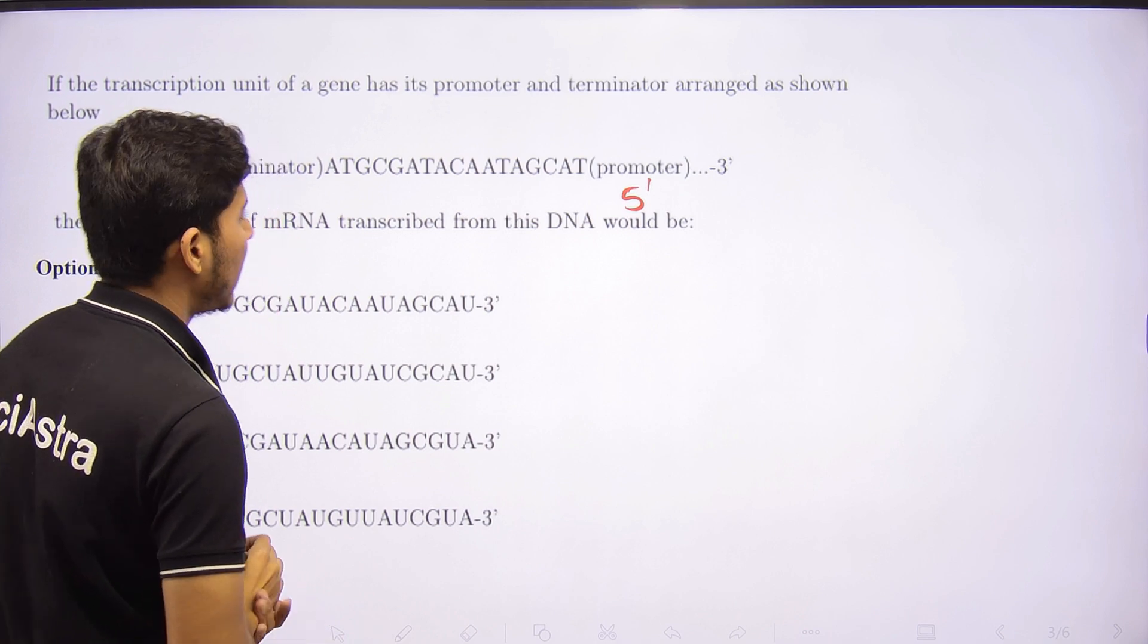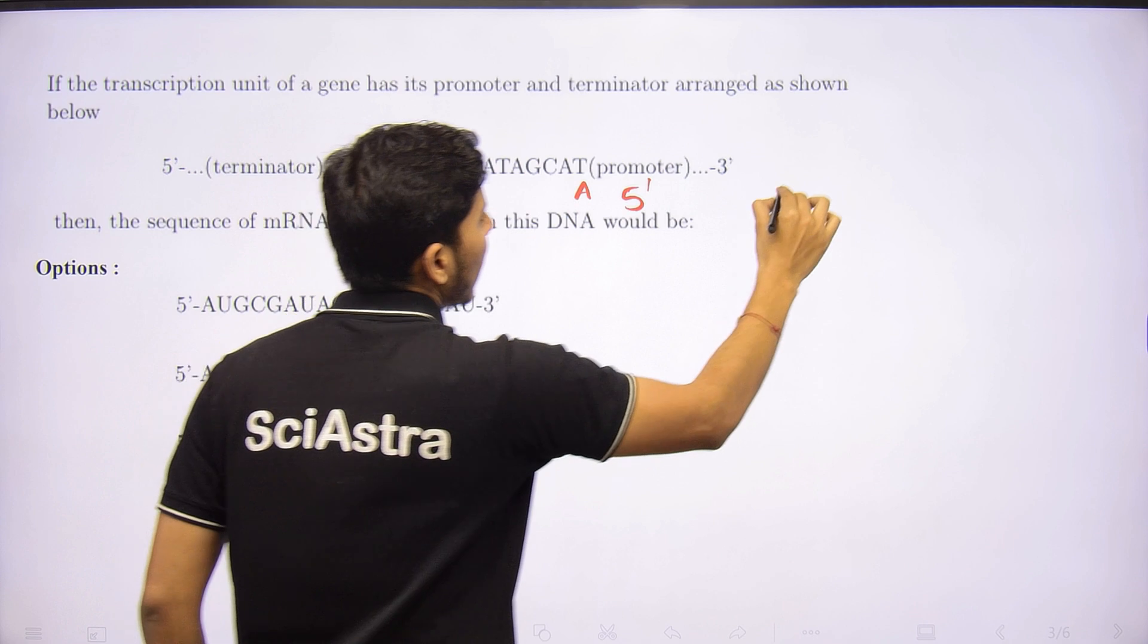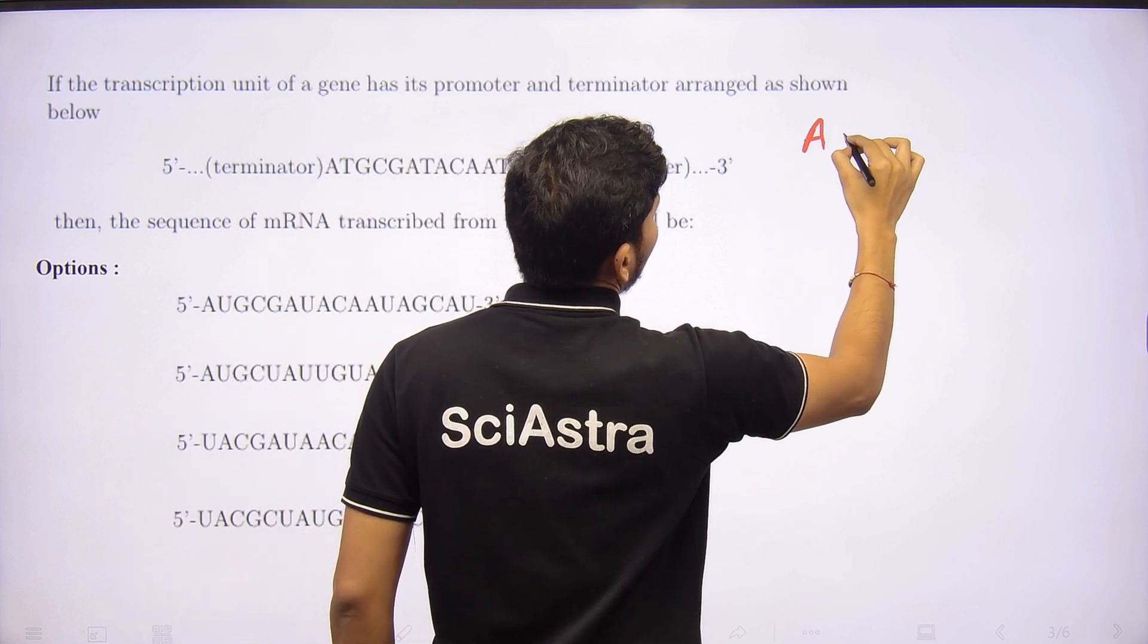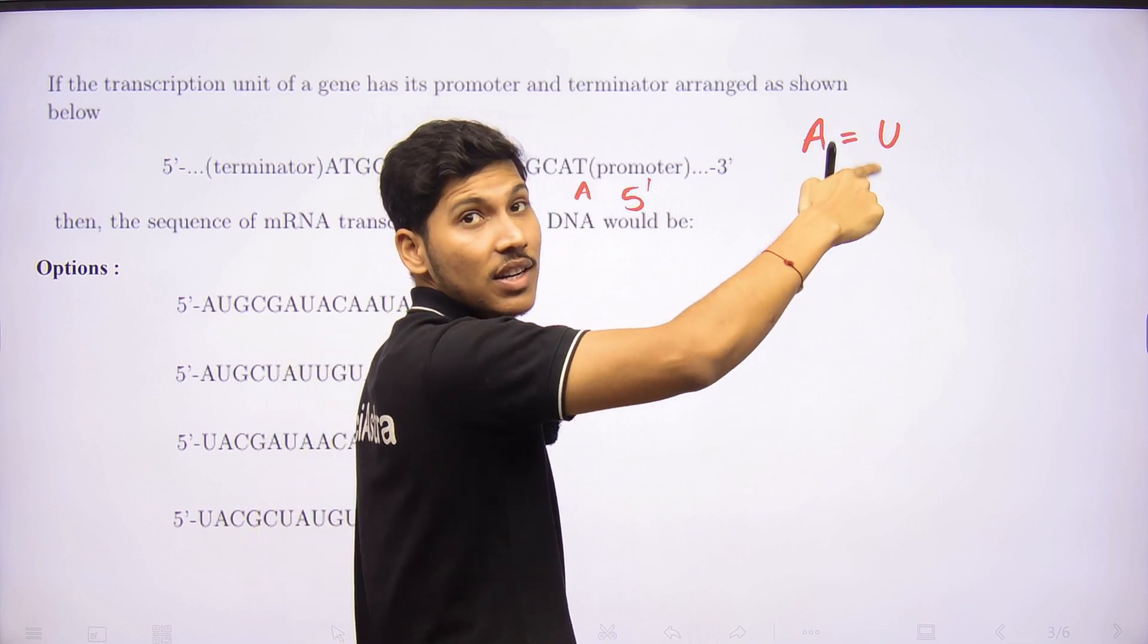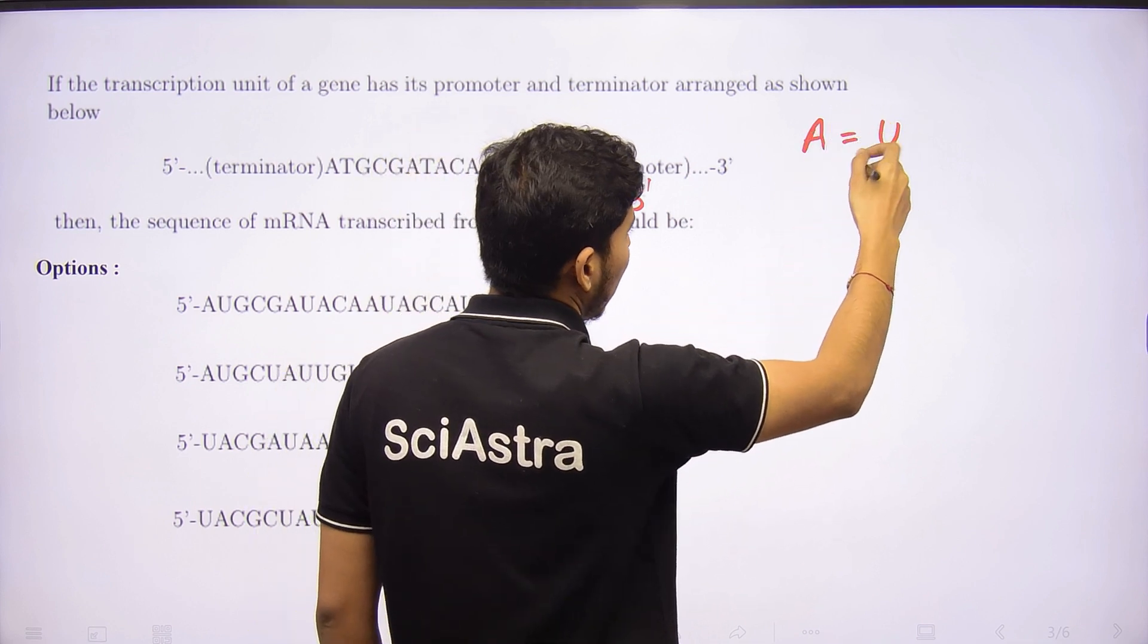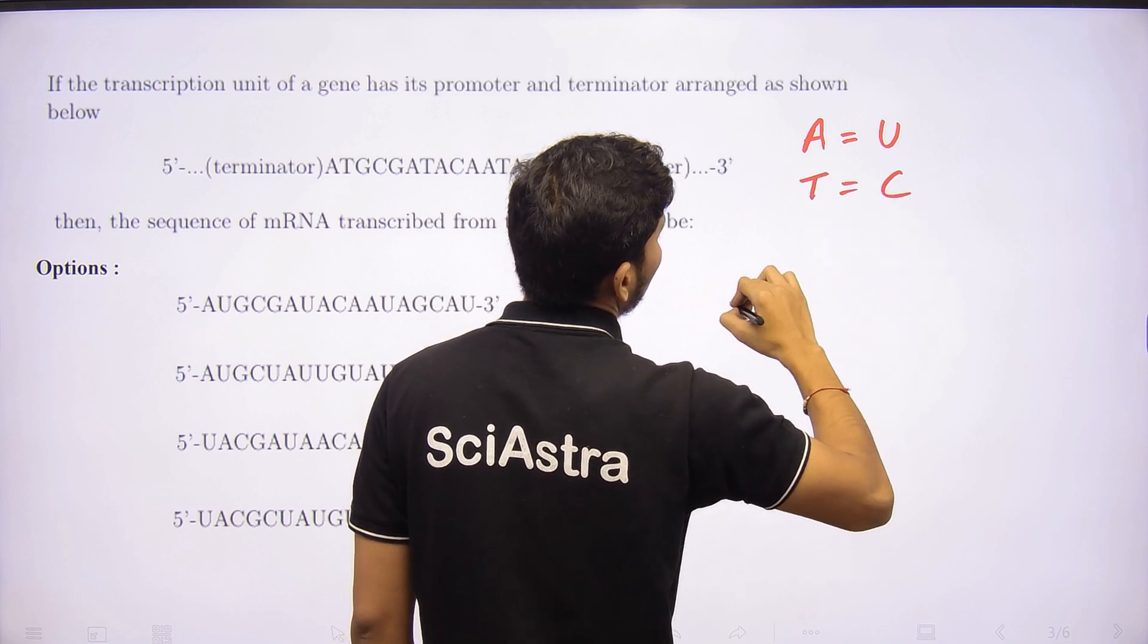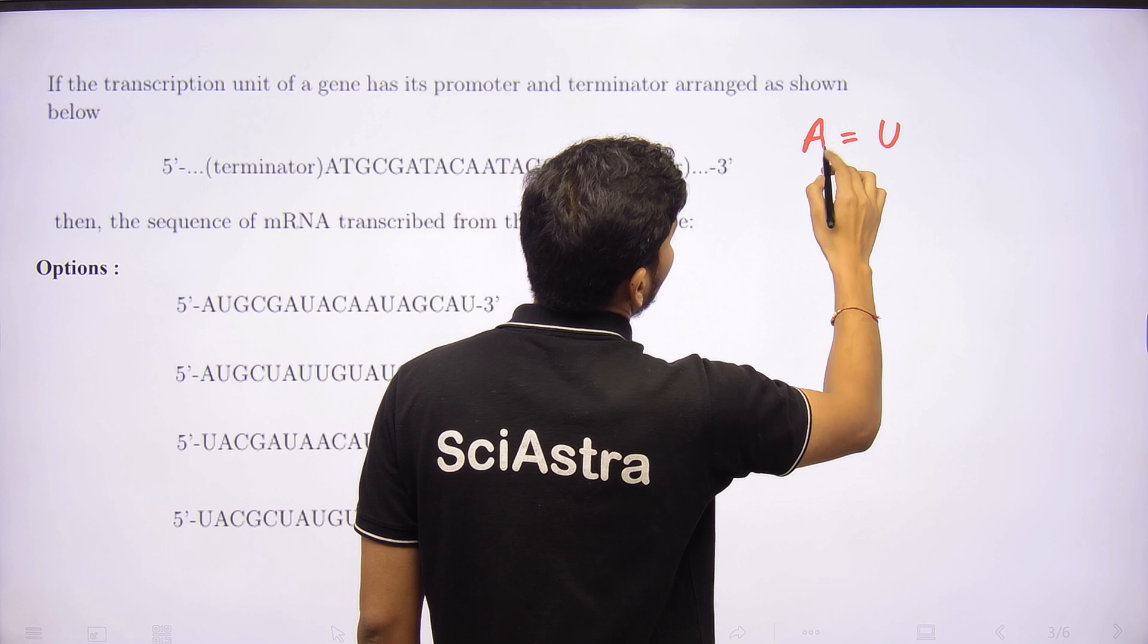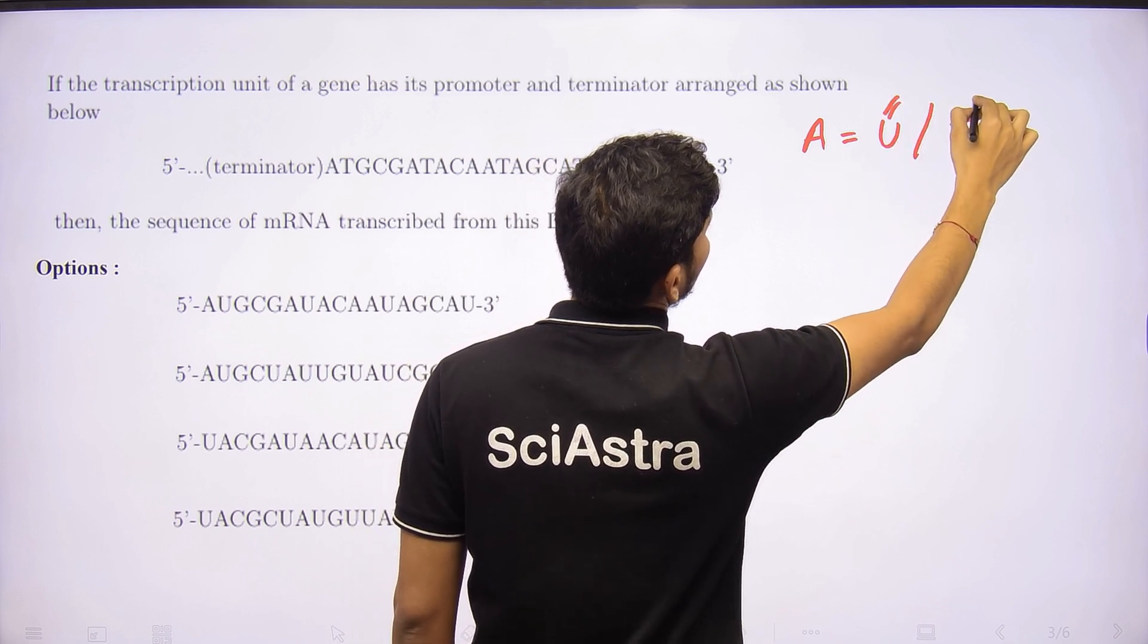T pairs with A, not C. A pairs with U in RNA and T in DNA. G pairs with C, either in DNA or RNA - this is common. But the A pairing keeps changing.